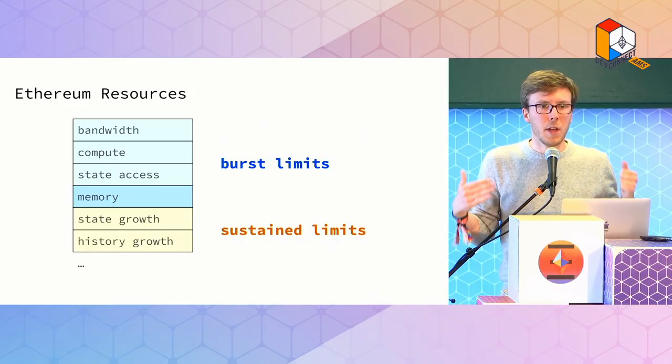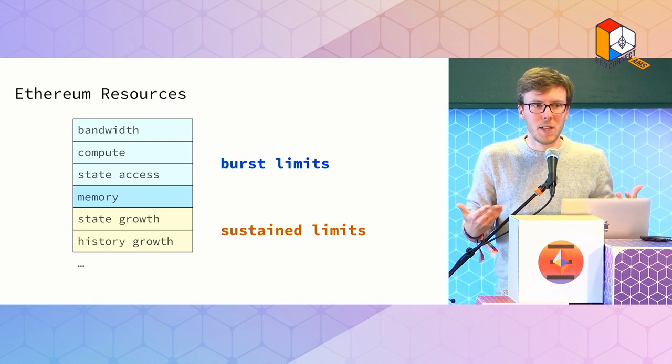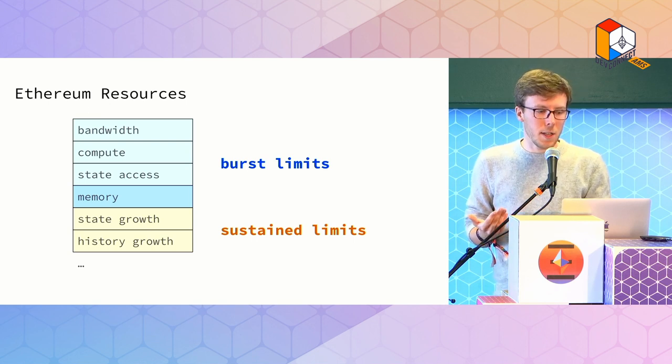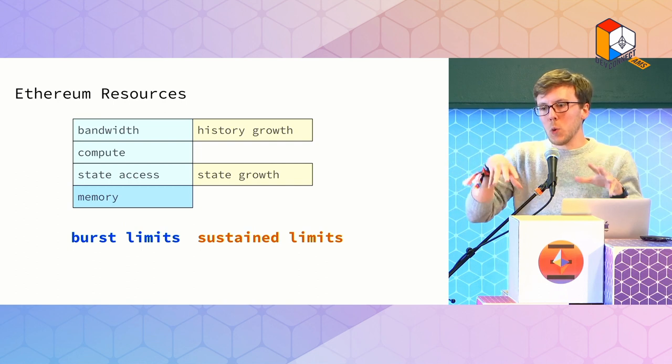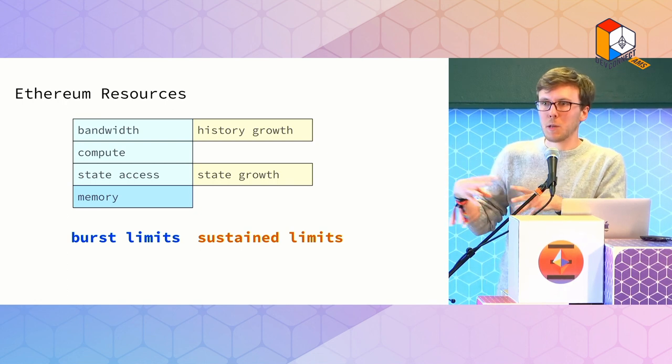The second question is the more interesting one. Indeed, if you have this target, on average gas is only half full. If you look at the blue burst-limited resources — bandwidth, compute, state access, memory — you could every single block just go to the maximum, but on average you're wasting half your bandwidth, half your compute, half your state access, half your memory. It's just basically not being used. It was already a problem with refunds before, but shouldn't we address it? As I said on the previous slide, yes, but — there's a but.